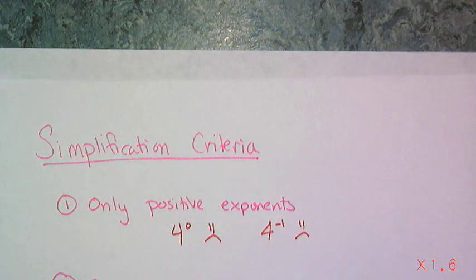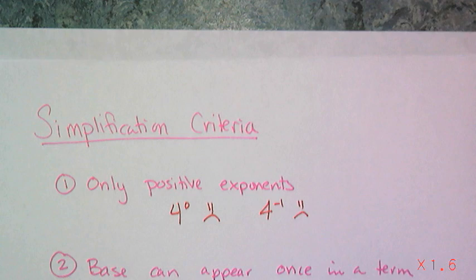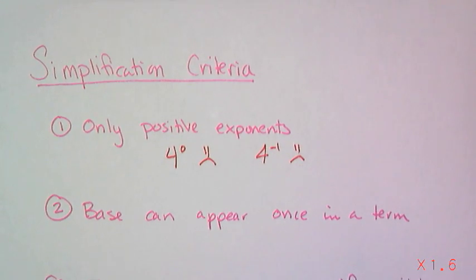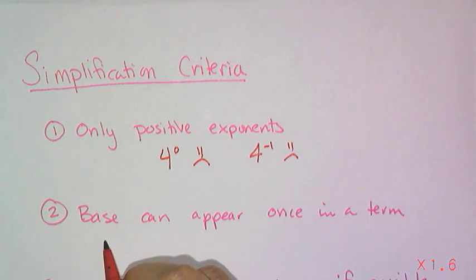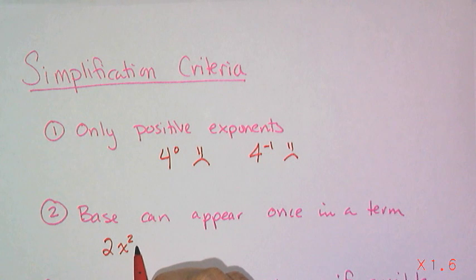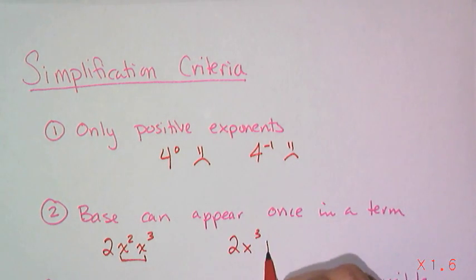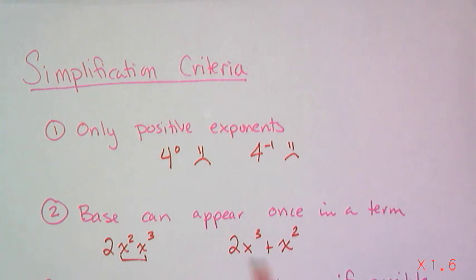You don't want negative or 0 exponents. This next one can be confusing if you don't know what a term is. So a base can appear only once in a term. So I don't want to see 2 times x squared x cubed. Because this is a single term and the base of x appears twice. Now don't get this confused with this. This is perfectly acceptable because I have two separate terms. So the base of 2 and the base of x appear once in this term. And the base of x appears once in this term.